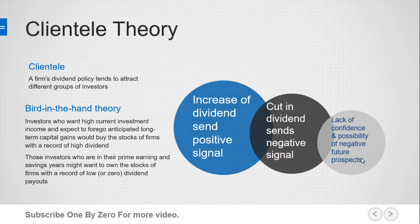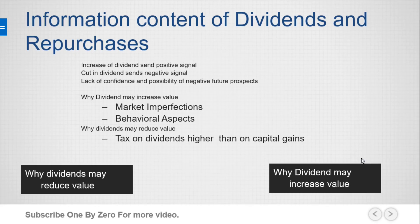An increase in dividends is a positive signal, while cutting dividends is a negative signal indicating a lack of confidence and the possibility of negative future prospects. The information content of dividends relates to future earnings: increasing dividends signals positives, cutting dividends signals negatives, and a lack of confidence about future prospects.